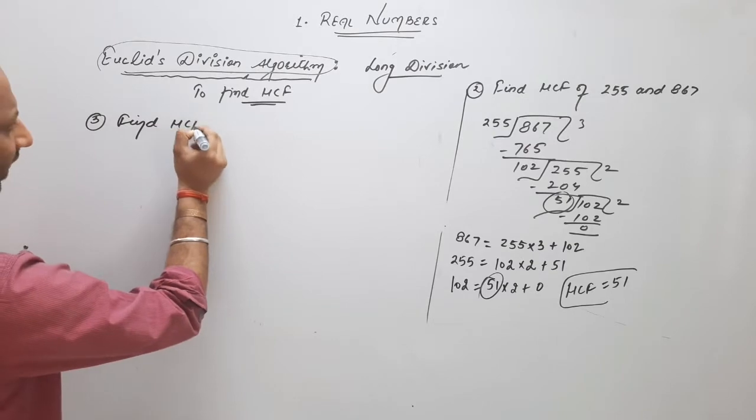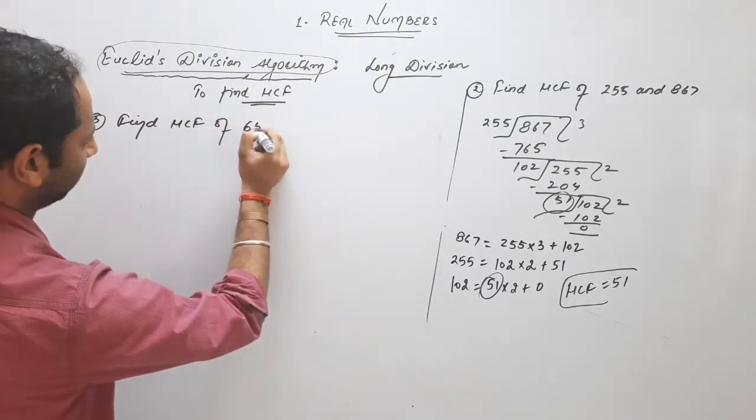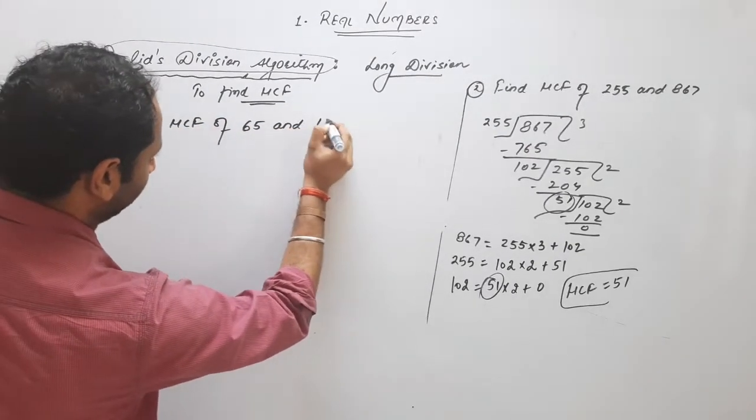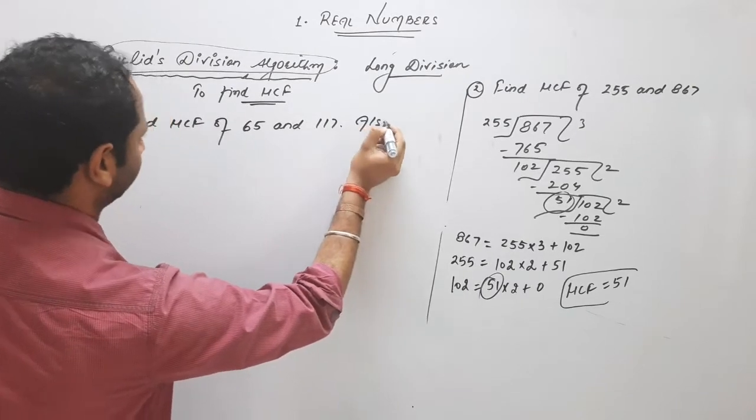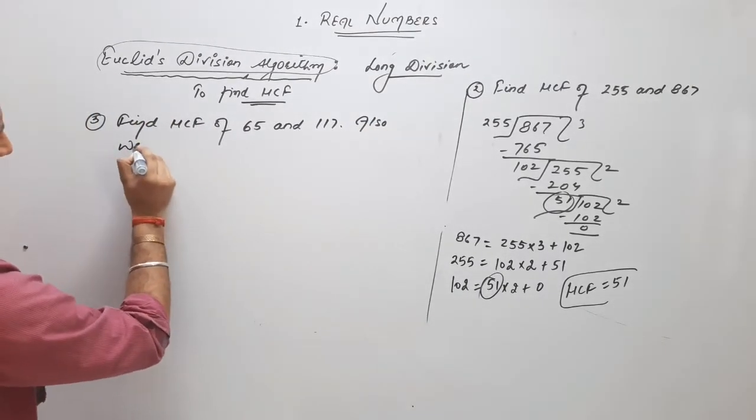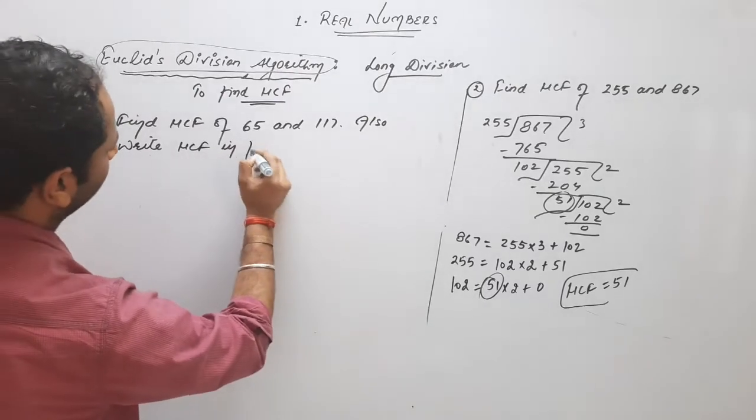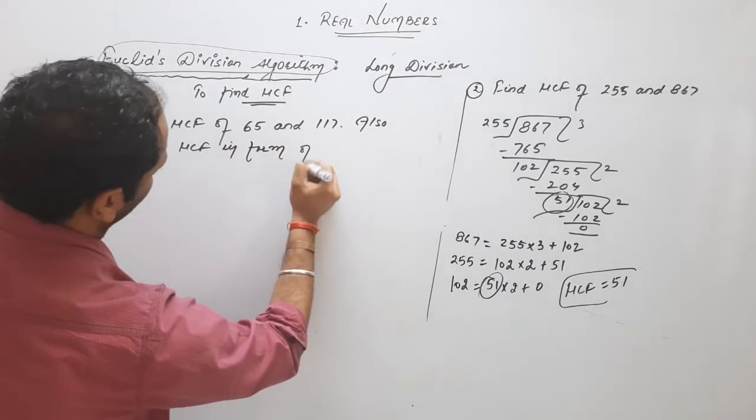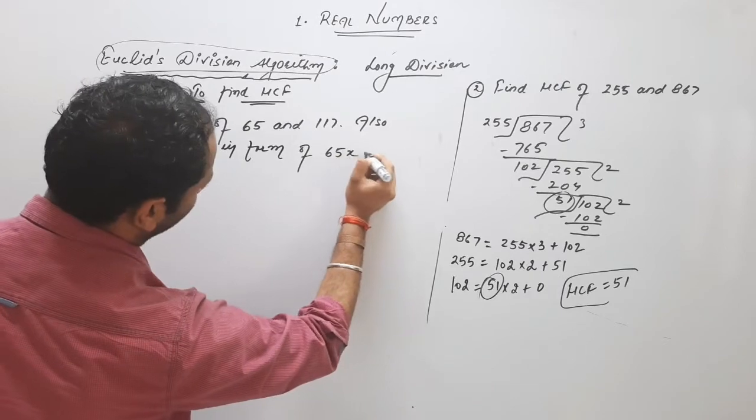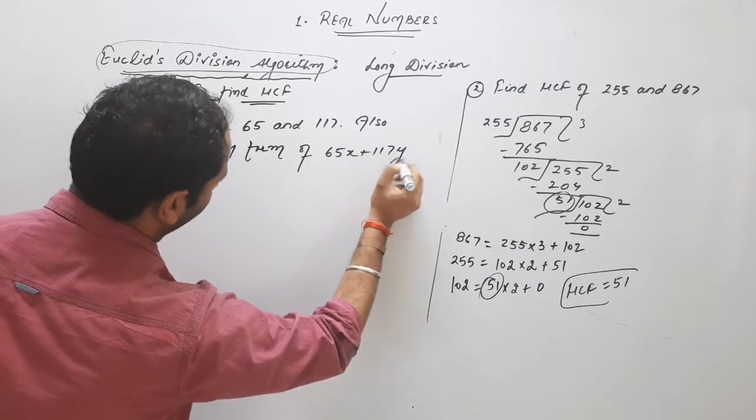Find HCF of 65 and 117. Also, write HCF in form of 65x plus 117y.